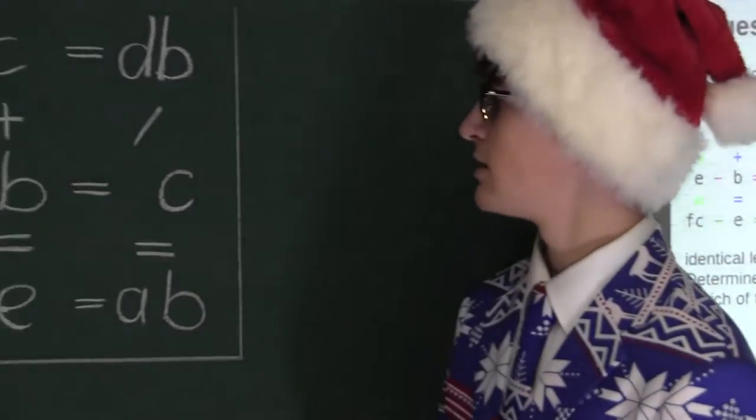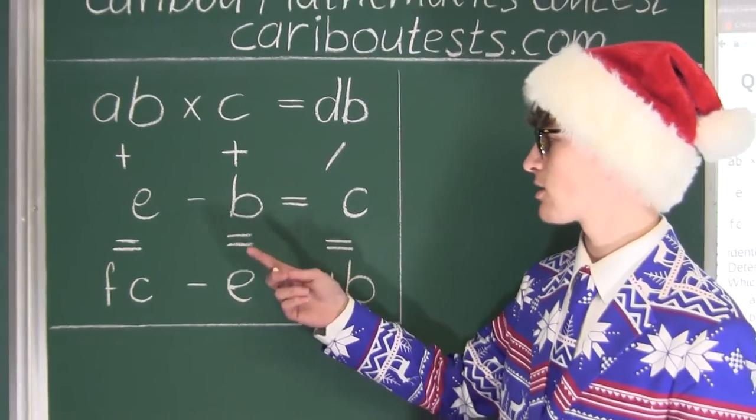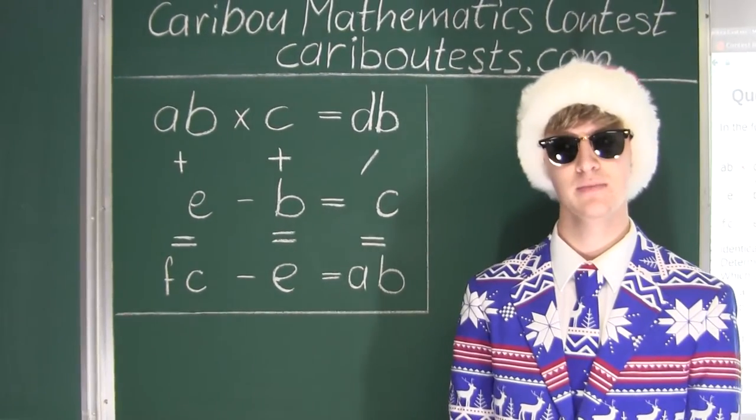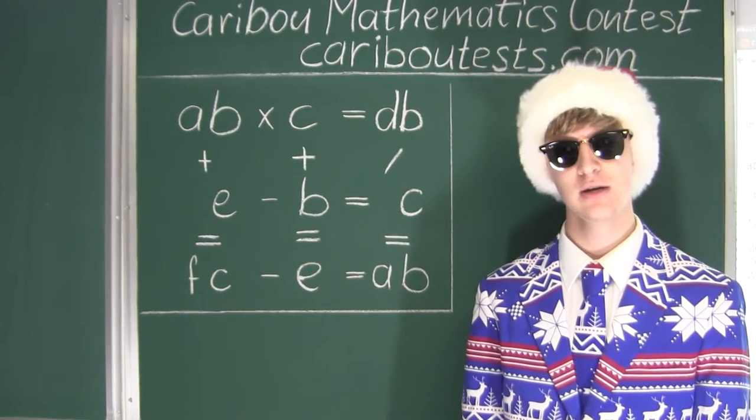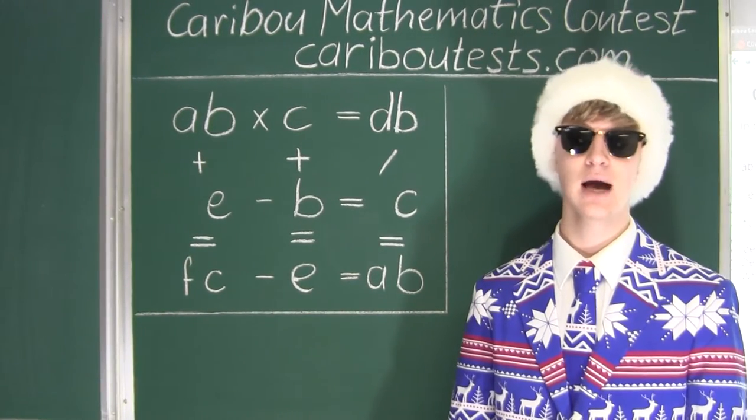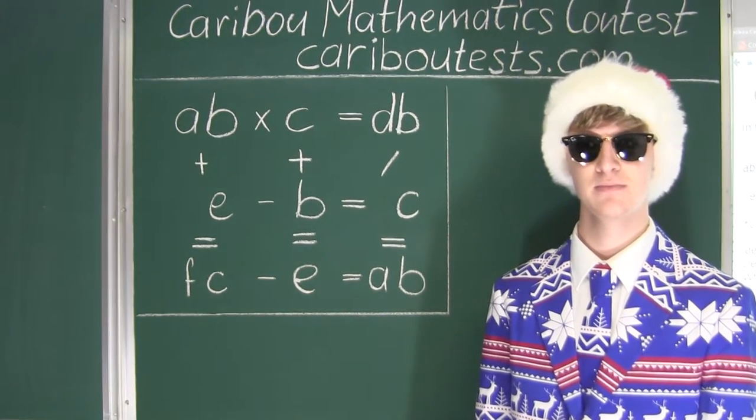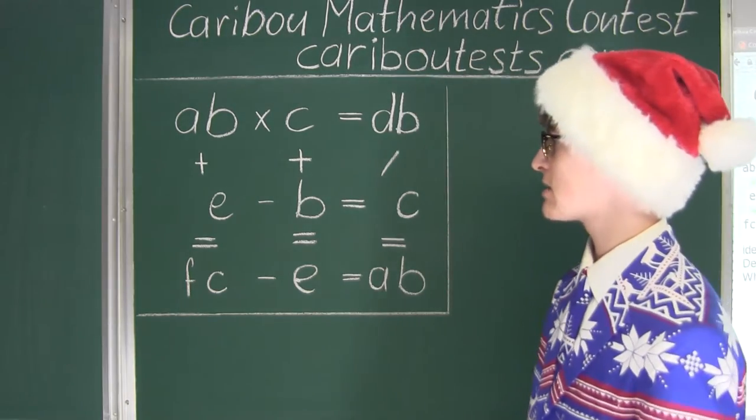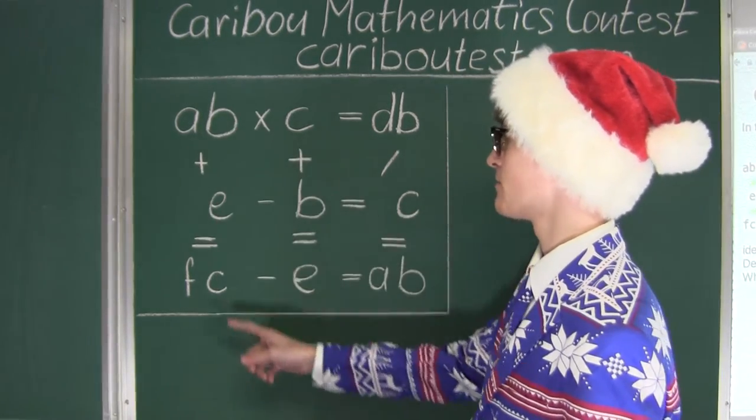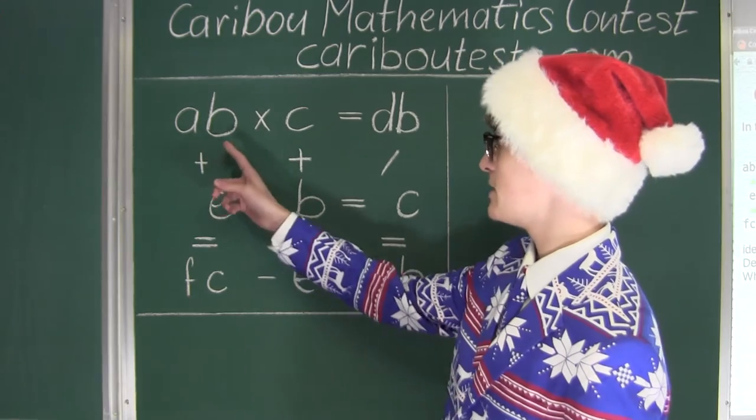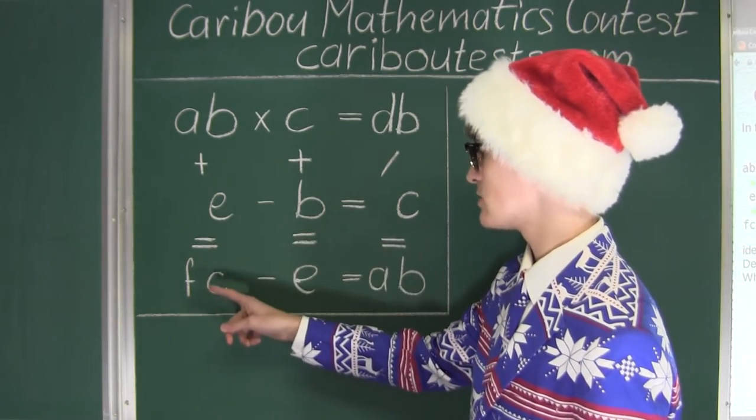So what we have here is just the exact same alphametic shown in the question. What we want to do is we want to find clues that will give us relations. Let's start by looking at the first column. We have AB plus E is equal to FC.